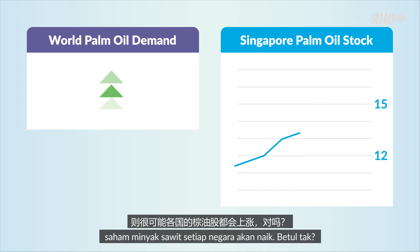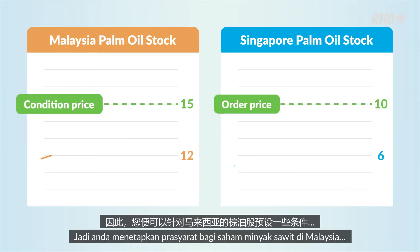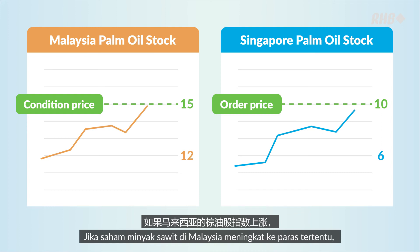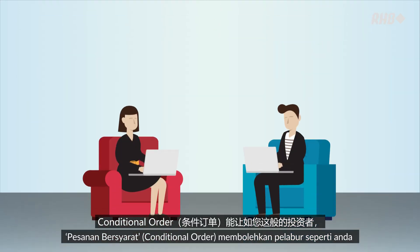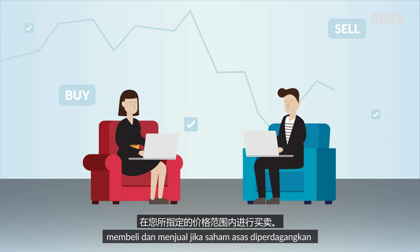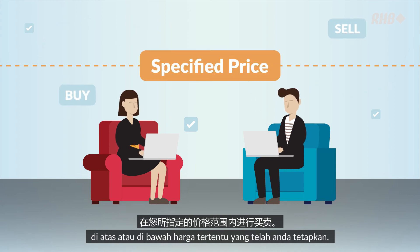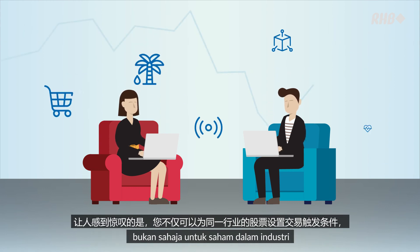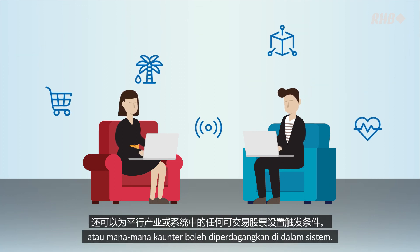For example, you're interested in a palm oil stock listed in Singapore. The thinking is simple: if there's world demand for it, most likely every country's palm oil stock will rise. So you preset a condition on a palm oil stock in Malaysia and set a price trigger — if the palm oil stock in Malaysia rises to a certain point, your order for the palm oil stock in Singapore will be promptly submitted. Conditional order allows you to buy and sell if the underlying stock is trading above or below a specified price level, and you can set your trade trigger for stocks in the same industry, parallel industries, or any tradable counters in the system.